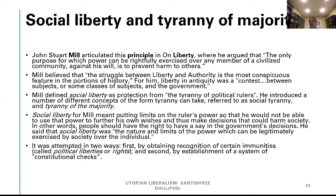Social liberty for Mill meant putting limits on the ruler's powers so that he would not be able to use that power to further his own wishes and thus make decisions that would harm society. People should have the right to have a say in the government's decision. Social liberty was the nature and limits of the power which can be legitimately exercised by society over the individual, attempted through recognition of political liberties or rights and by the establishment of constitutional checks.